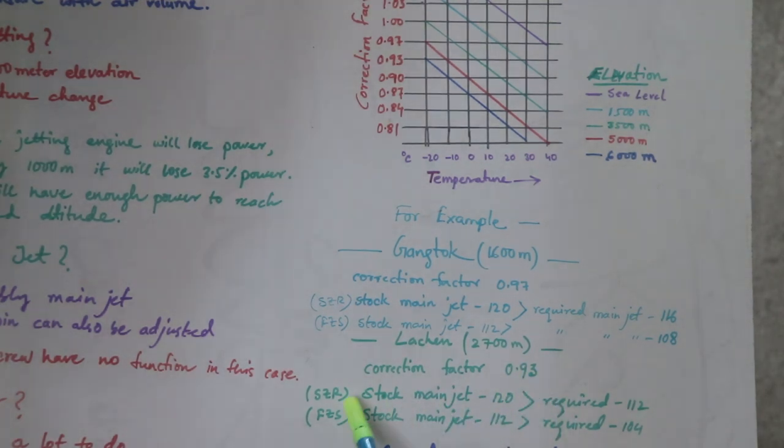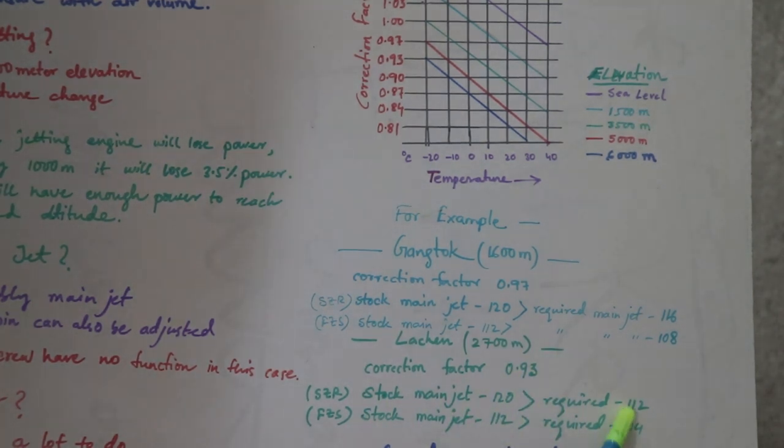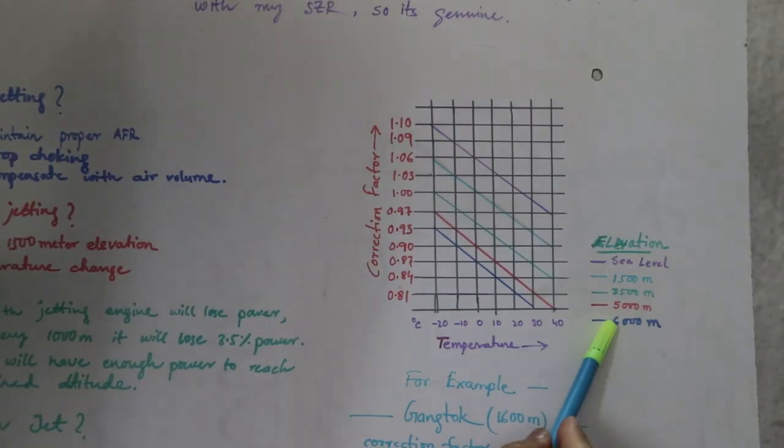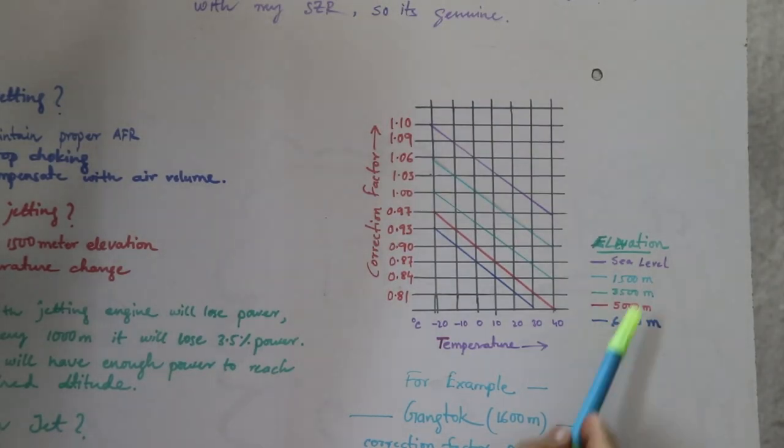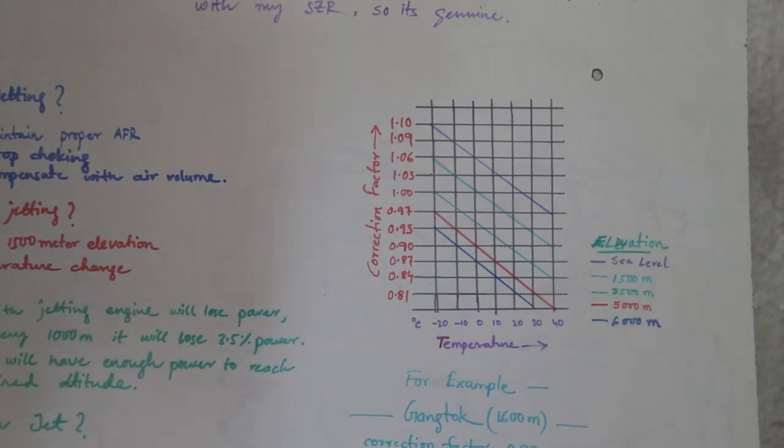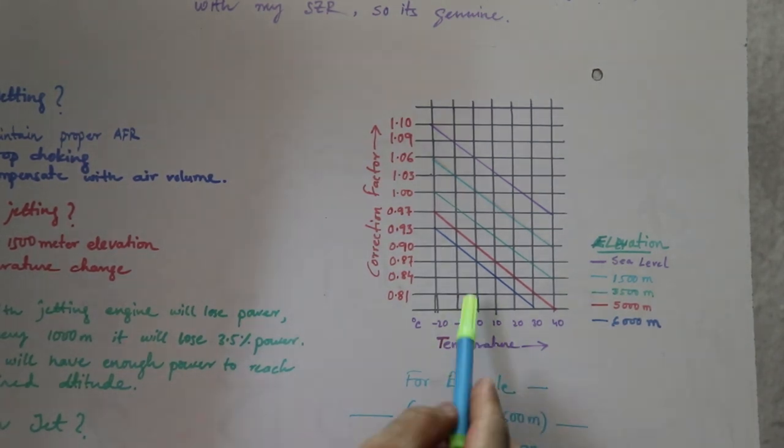Between 0 to 10 degrees centigrade you can see the intersecting point is indicating the correction factor 0.93. So multiplying with 0.93 you can get the respective jetting numbers. In 6,000 meter, that is Gurudongmar,